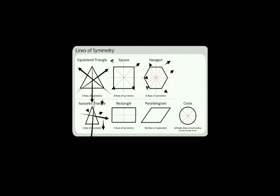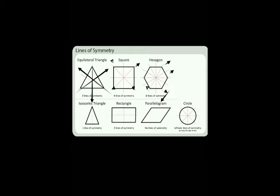In an isosceles triangle the lower parts are not the same on both sides, so we can draw only one line of symmetry — the vertical line. For a rectangle, we draw two lines of symmetry because the length and breadth have different measurements. For a parallelogram, there is no line of symmetry because drawing a symmetrical line does not give equal parts. For a circle, there are infinite lines of symmetry passing through the center.